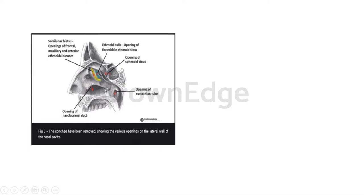The medial wall of the nasal cavity is also known as the septum, a partition separating the two sides — and it is only single. The eustachian tube, also called the auditory tube, opens into the nasopharynx and can be seen in sagittal section.